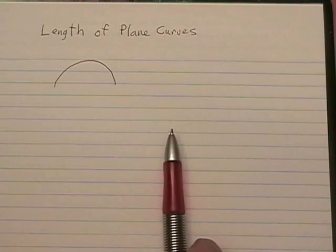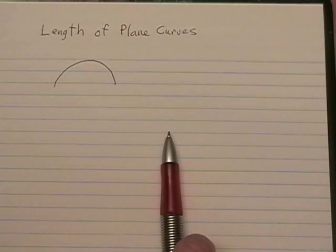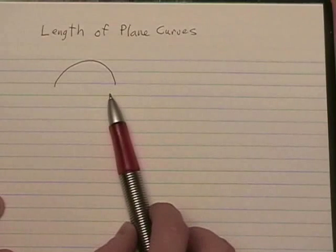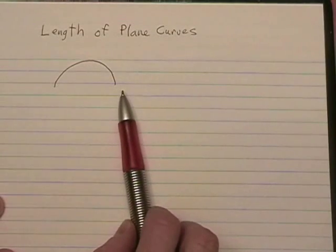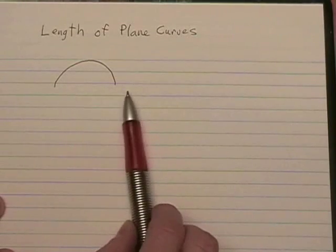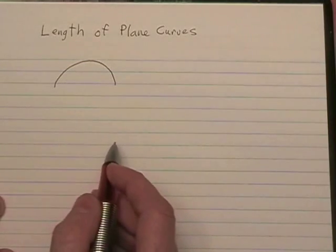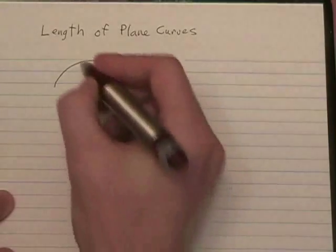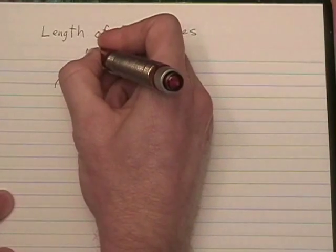Now, we can't actually work with a circle in this particular problem because a circle is not a function. However, we can work on a semicircle and then just double it. A semicircle is a function. As usual, we want to draw a picture, which I started here, including our x and y-axis.